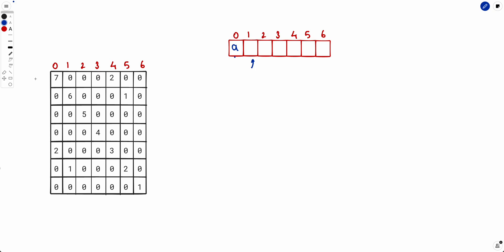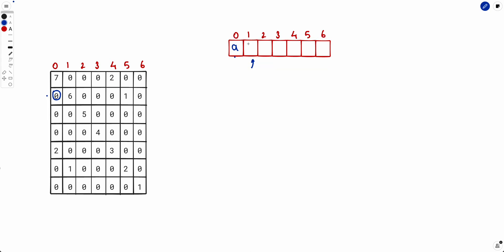So LCP(1,0) — here it is 0. That means the substring starting at 1 and the substring starting at 0 share no prefix at all, which means this character would never equal the 0th character. So the first character (position 1) is not 'a'. The best possible second character is 'b', since we need the lexicographically smallest one.